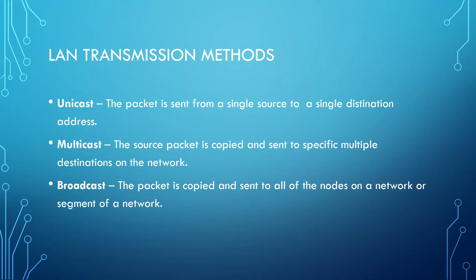LAN transmission methods include three forms: Unicast — the packet is sent from a single source to a single destination. Multicast — the source packet is copied and sent to specific multiple destinations on the network. Broadcast — the packet is copied and sent to all nodes on a network or segment. Think of unicast as one-to-one, and broadcast as one-to-many.